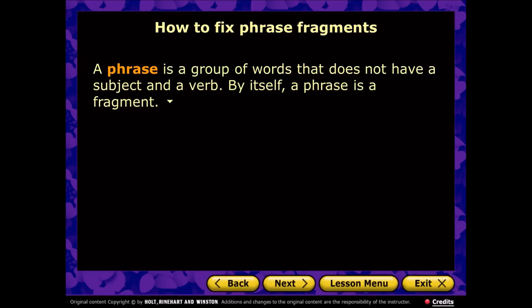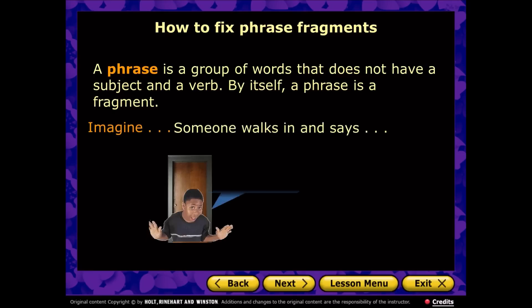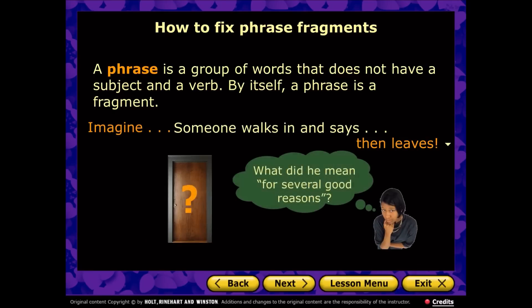So let's say one day a young man walks into our classroom, opens the door, and says 'for several good reasons,' and then he leaves. You and I would wonder what in the world he meant by 'for several good reasons.' Obviously that's a fragment — it's not a complete thought. It's a phrase fragment, and specifically it's a prepositional phrase: 'for' being the preposition, 'reasons' being the object of the preposition, and 'several good' being two adjectives modifying 'reasons.'